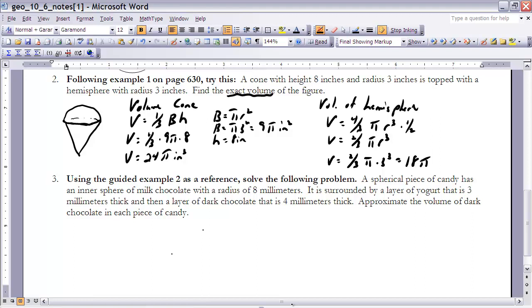And that would also be in cubic inches. And now if I'm going to find the volume of the whole thing, so let's put that right here. The volume of the whole thing would be equal to 24π plus 18π, which is equal to, let's see, that would be 42π cubic inches. So that would be the volume of that whole figure.